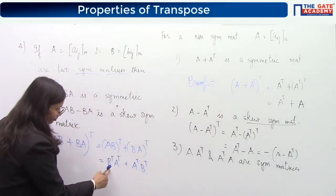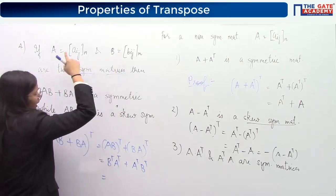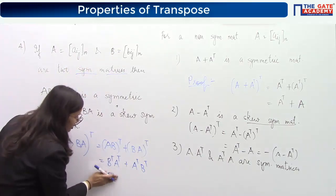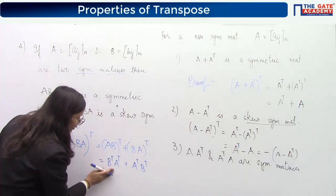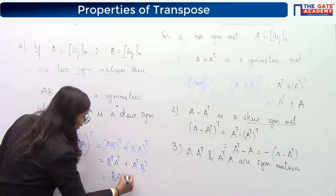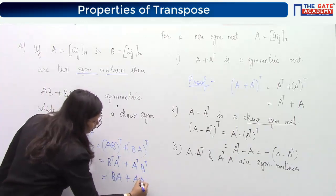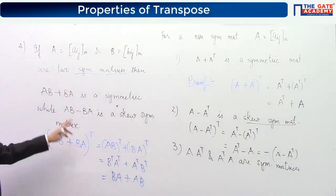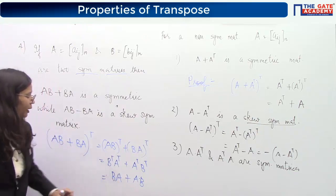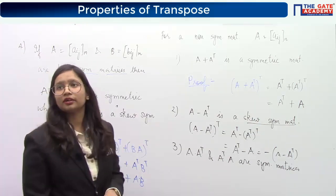Now, since B is symmetric, B transpose equals B, and since A is symmetric, A transpose equals A. Substituting, B transpose A transpose plus A transpose B transpose becomes BA plus AB, which is the same as the initial matrix AB plus BA. Therefore this quantity equals the original matrix, confirming it is a symmetric matrix.